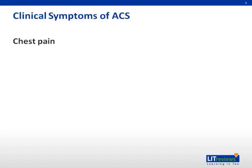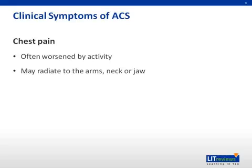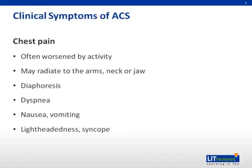There are three cardinal signs and symptoms of ACS. The first is chest pain. While chest pain can be nonspecific, factors that make it more suggestive of a cardiac etiology include pain that is worsened by activity, radiates to the arms, neck, or jaw, or is associated with diaphoresis, dyspnea, nausea, vomiting, lightheadedness, or syncope.